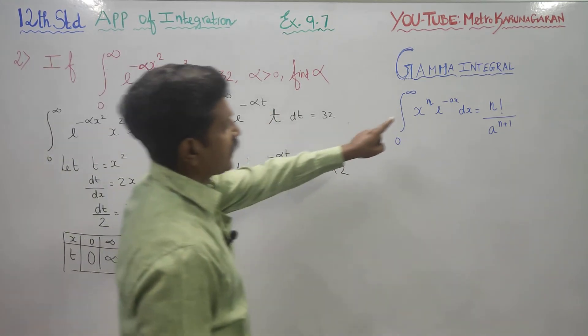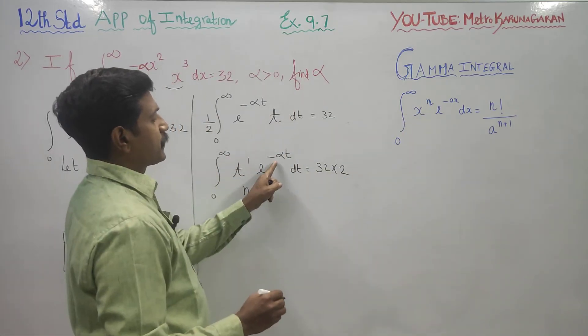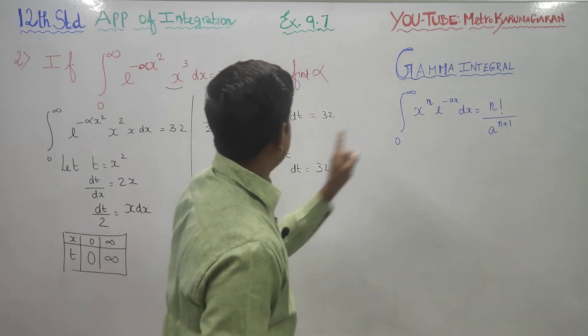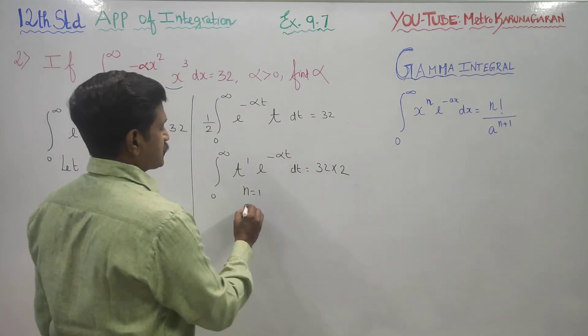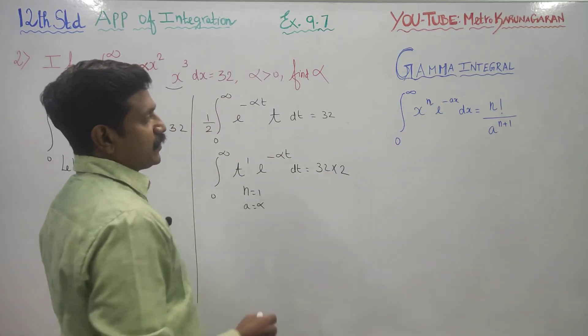You can see x to the power n, my n is 1. E to the power minus a x, a is my alpha. Therefore you can comfortably use this formula.